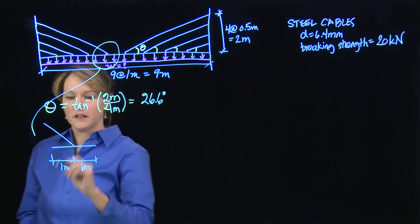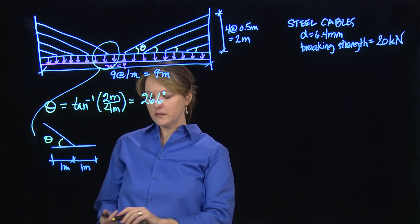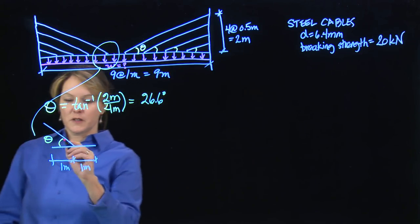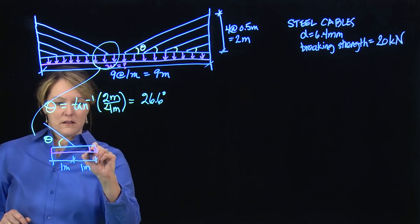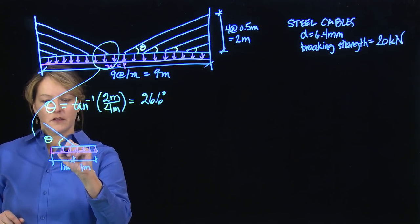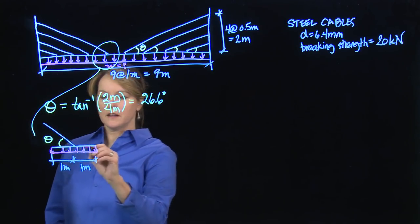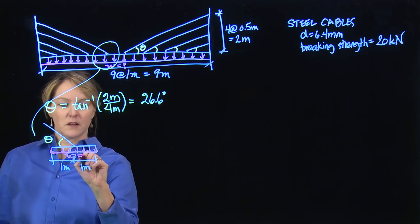And that angle, again, is here at 26.6 degrees. And I have a distributed load on it. And this is my free body for a single cable, and I'm going to calculate the force in the single cable. So that's that W. We don't know what that W equals.